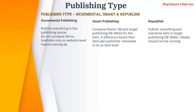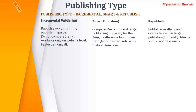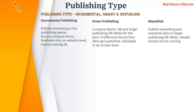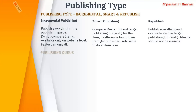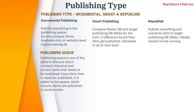When you select any item and publish with republish, it doesn't compare anything — it just copies that item from one database to another database. We generally do not use republish; we generally use smart publish or incremental publish. Now let's see what the publishing queue is — it is one of the tables in Sitecore which stores historical and current item data that needs to be published.